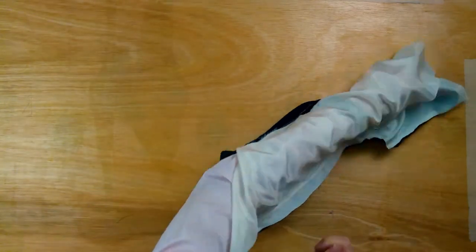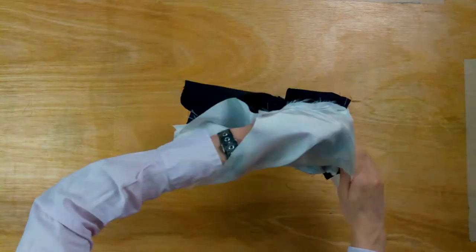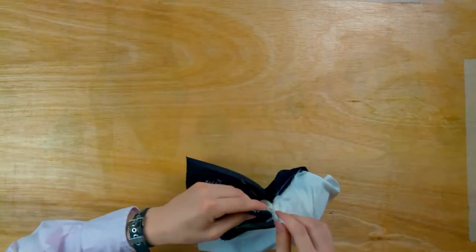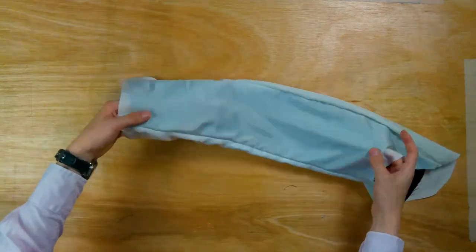Turn the sleeve out by sticking your hands through the lining, and pulling the sleeve through like that. Remove the pin, and reattach it to the same place on the outside.